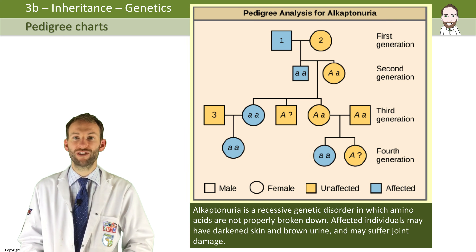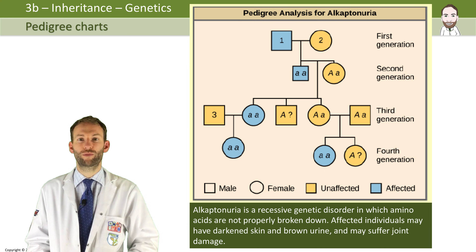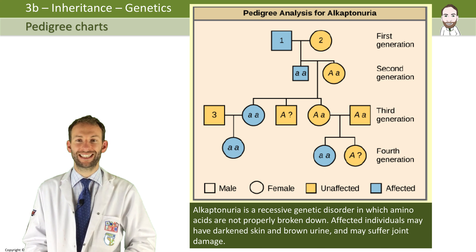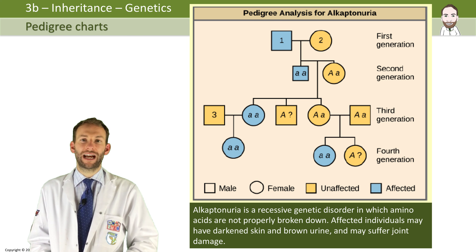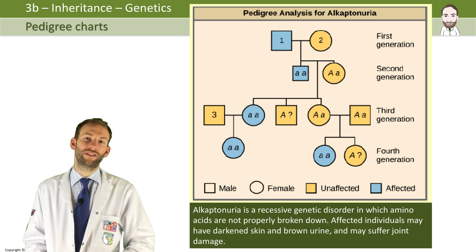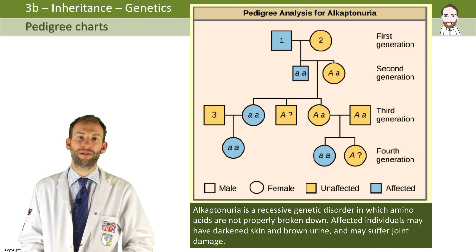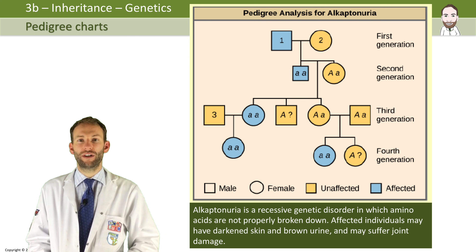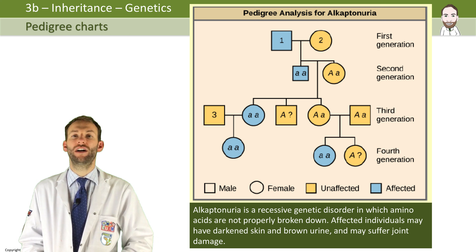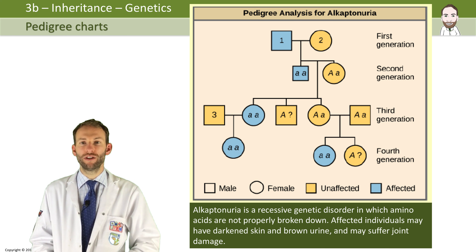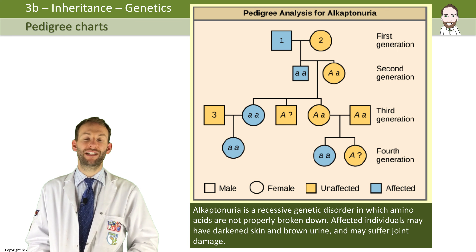Here's a family pedigree chart for something called alcaptonuria. Alcaptonuria is a recessive genetic disorder in which amino acids are not properly broken down. People who have this genetic disease will have darkened skin, brown urine, and may suffer from joint damage. The individuals one and two are the oldest people in this diagram — a male and a female. The squares are male, the circles are female, and a key is given to you for these family pedigree charts. If they are blue, that means they're affected; if they're yellow, that means they don't have the disease.